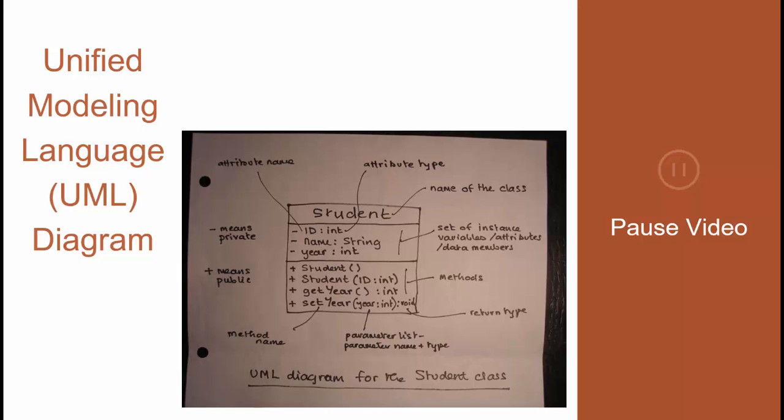As you can see for this student object, there are three pieces of data: an ID, a name, and a year, probably their current year in school. The processes include two constructors. We'll talk about those later, as well as two processes that get and set the year field. These are called accessor methods, which we'll talk about in a later lesson.